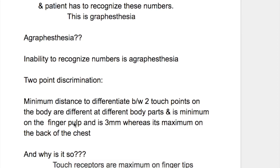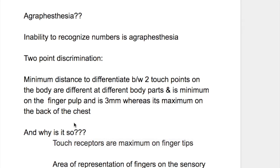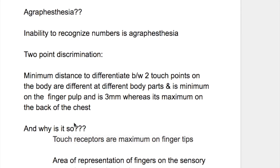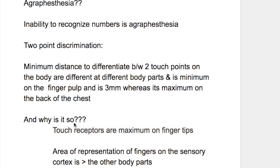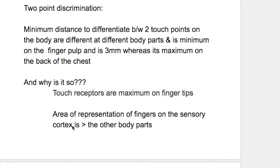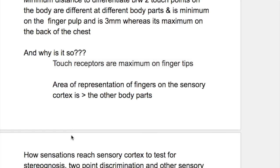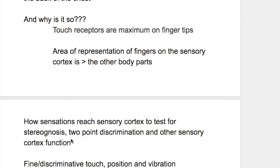How about two-point discrimination? The minimum distance to differentiate between two touch points on the body differs at different body parts. It is minimum on the finger pulp at 3 mm, whereas it is maximum on the back of the chest. Touch receptors are maximum on the fingertips, and the area of representation of fingers on the somatosensory cortex is greater than other body parts.